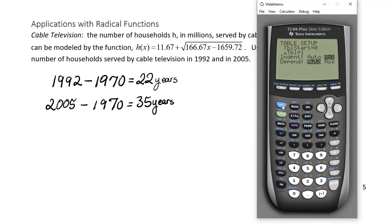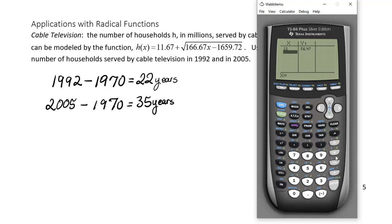Since it's already set to ask, we can go to second quit again. Now we want to go to second table. Let's enter 22 and click enter. The answer we get is 56.47 million households.